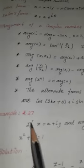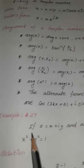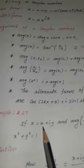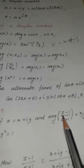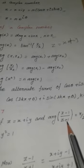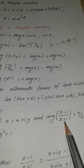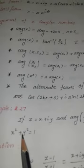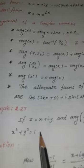Example 2.27: If z = x + iy and argument of (z − 1)/(z + 1) = π/2, show that x² + y² = 1.